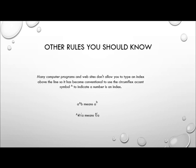Many computer programs and websites don't allow you to type an index above the line, so it's become conventional to use the circumflex accent symbol, which on a UK keyboard is shift six, to indicate that the number is an index. So a circumflex b means a raised to the power b. If the circumflex comes before the number, as in circumflex 4 then the radical symbol then a, it means the fourth root of a. It's just much easier to type shift six than to look in your character map for superscript numbers. So people still use the circumflex accent to mean that a number or letter is going to be in the superscript.